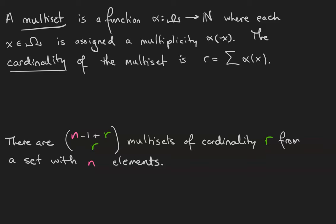A multiset is a function alpha from the universe omega to the natural numbers, where every x in omega is assigned a multiplicity alpha of x. The cardinality of the multiset is the sum of all of the multiplicities.